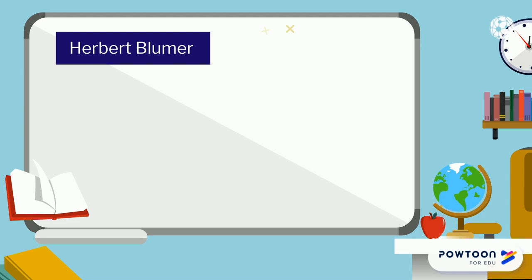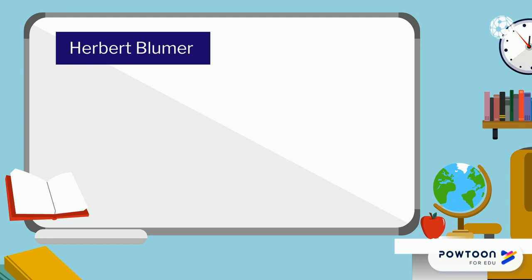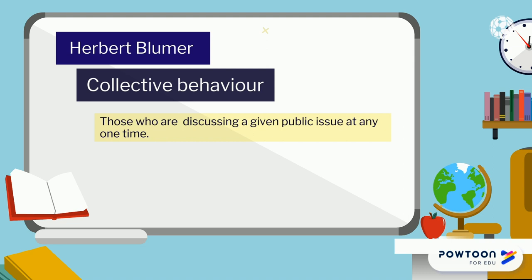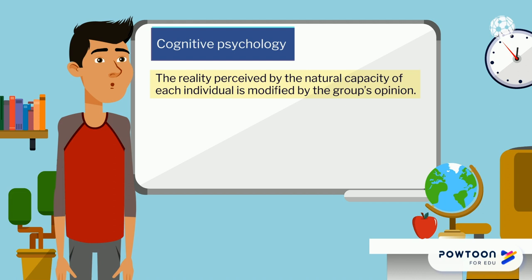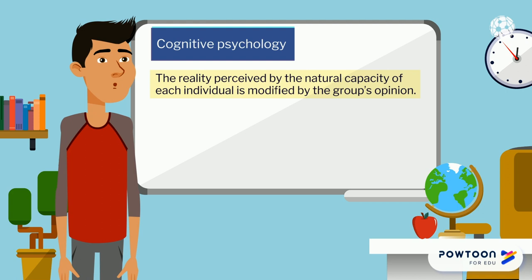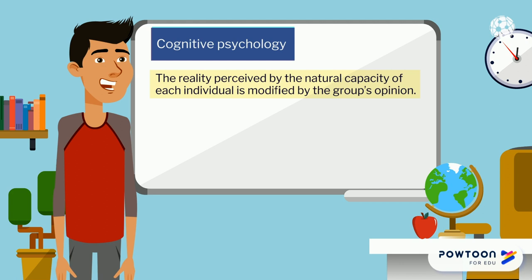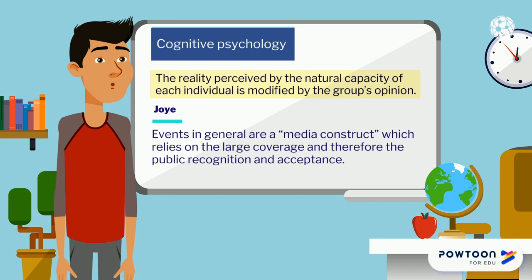The American sociologist Herbert Blumer proposed an altogether different conception of the public. According to Blumer, public opinion is discussed as a form of collective behavior made up of those who are discussing a given public issue at any one time. There are many publics, each coming into being when an issue arises and ceasing to exist when the issue is resolved. According to cognitive psychology, the reality perceived by each individual is modified by the group's opinion, causing the individual to modify his own perception in favor of that of the group that influences him. This perspective has been largely embraced by various authors who suggest that events in general are a media construct which relies on large coverage and therefore public recognition and acceptance.